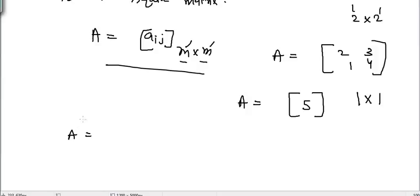For example, if I write 2, 3, 2, 1, minus 1, 2, 0, 2, 3, 5, then it's an example of 3 cross 3 square matrix here.